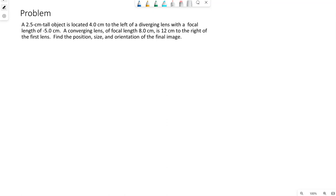A converging lens of focal length 8 centimeters is 12 centimeters to the right of the first lens. Find the position, size, and orientation of the final image.